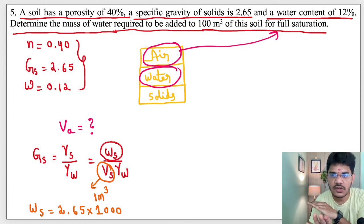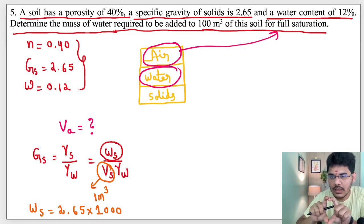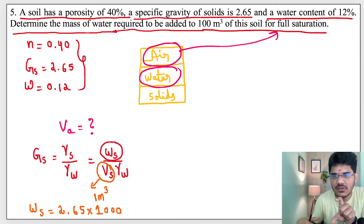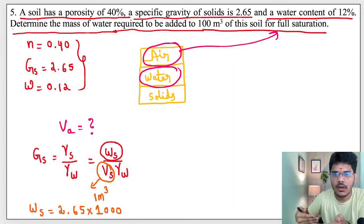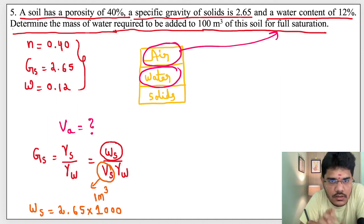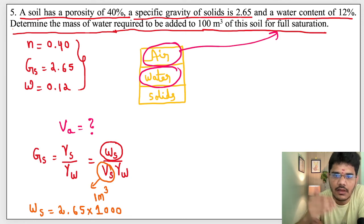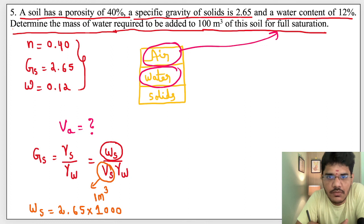To summarize: the given soil is not fully saturated, so it has some air voids. We calculated the volume of air voids for 1 m³ of soil, proportionated it to 100 m³, and converted to mass of water. I will solve a few more questions and previous year GATE questions on soil-water relationships before moving into index properties of soil. Thanks for watching — please like and subscribe if you find the content useful.